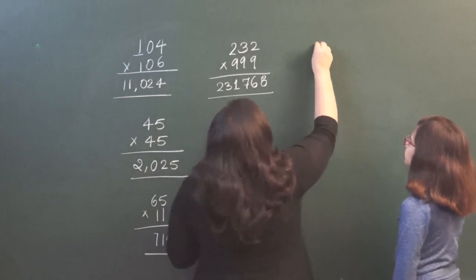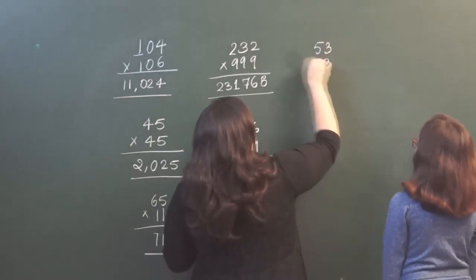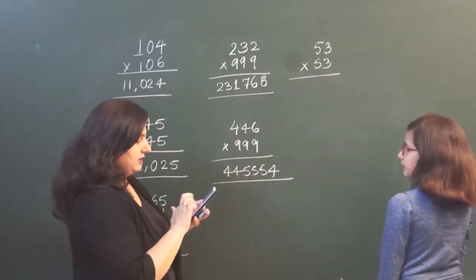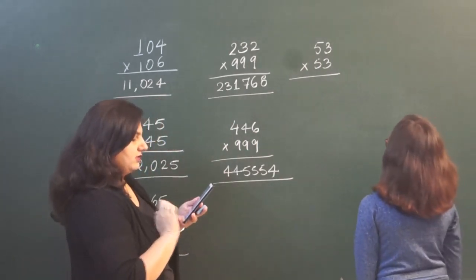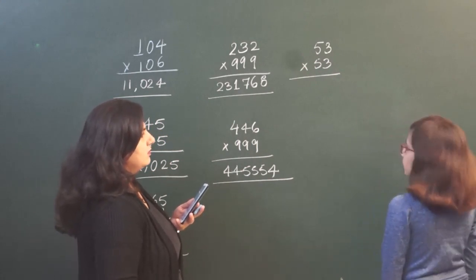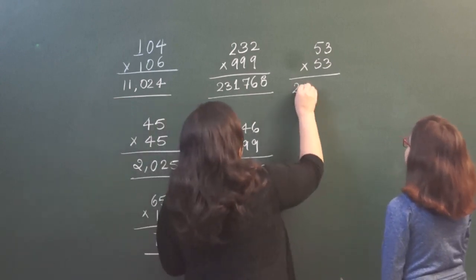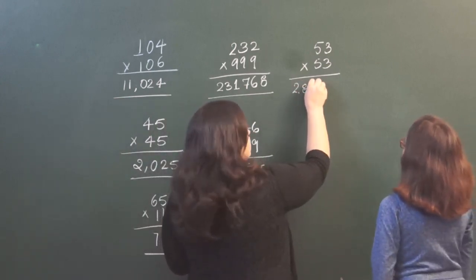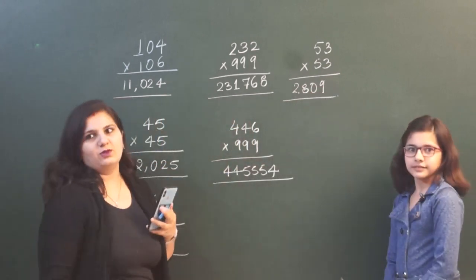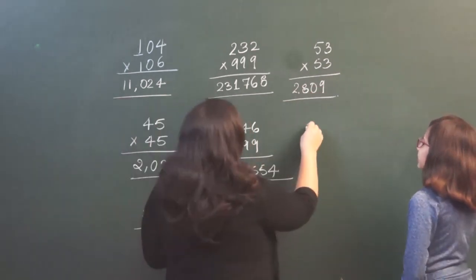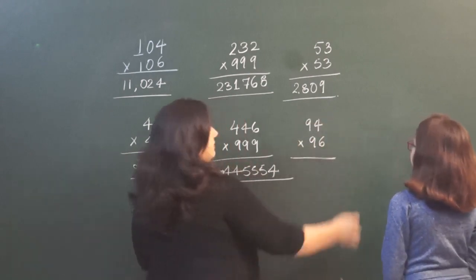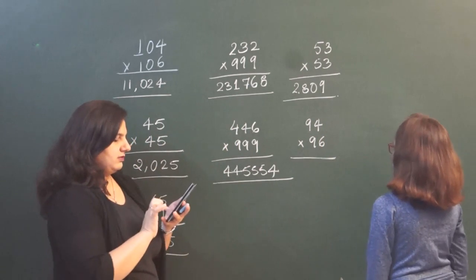Now you have to tell me the square of 53. The answer is 2809. Yes, that's the correct answer — 2809.